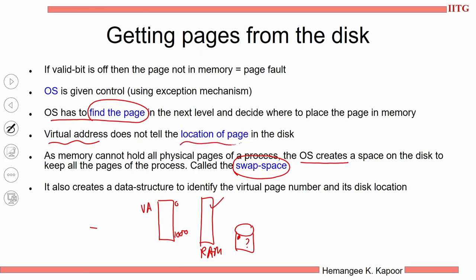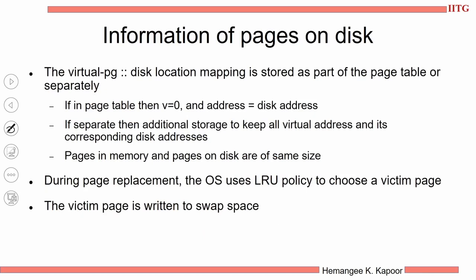How do I identify the location of the page? Inside the RAM, we need to keep additional mapping of the virtual page number to the disk location. The OS keeps this because it knows which part of the swap space is used for which process. We need a separate data structure which will maintain the mapping between the virtual page number and the disk location. The first mapping was virtual page number to physical page number; now I need a virtual page number to disk location mapping.